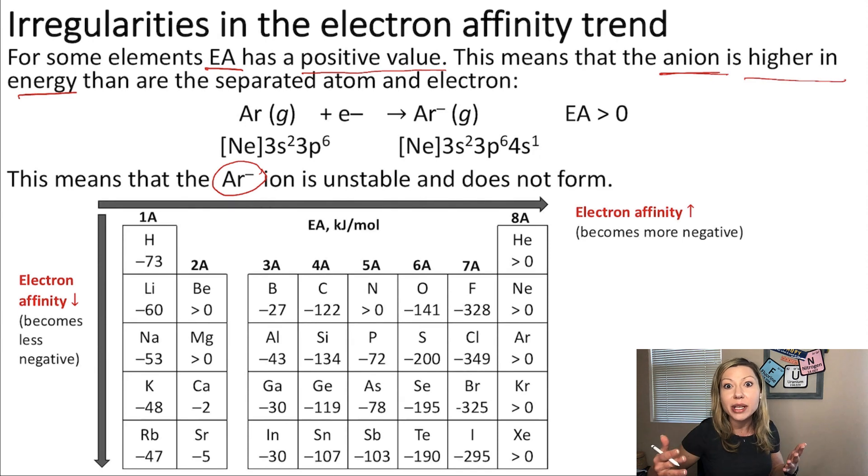Several elements are like this in the periodic table. For example, the noble gases. As you can see here, we have argon gas. We add an electron, we would form an argon anion, but the electron affinity is higher than zero.